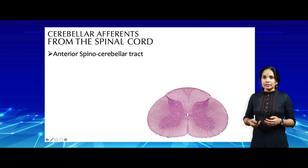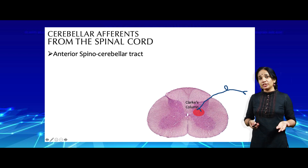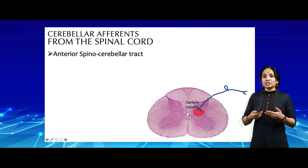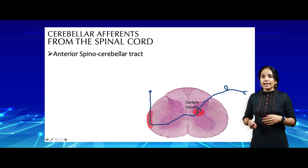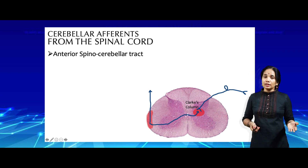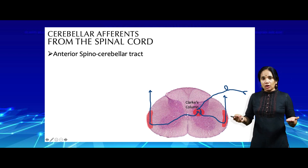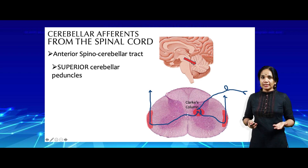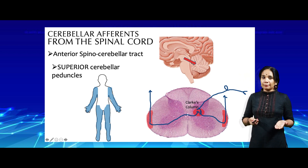The anterior spino-cerebellar tract starts as central processes from pseudo-unipolar neurons located in the dorsal root ganglia. These central processes relay in the nucleus dorsalis — also known as Clark's column — in the posterior gray horn of the spinal cord. The majority of fibers cross over to the opposite side and enter the anterior spino-cerebellar tract of the opposite side, while a small minority continue on the same side. Both tracts ascend to the brain stem and enter the cerebellum via the superior cerebellar peduncles, providing information from proprioceptive receptors, joint position receptors, and muscle tendon receptors from the upper and lower limbs.